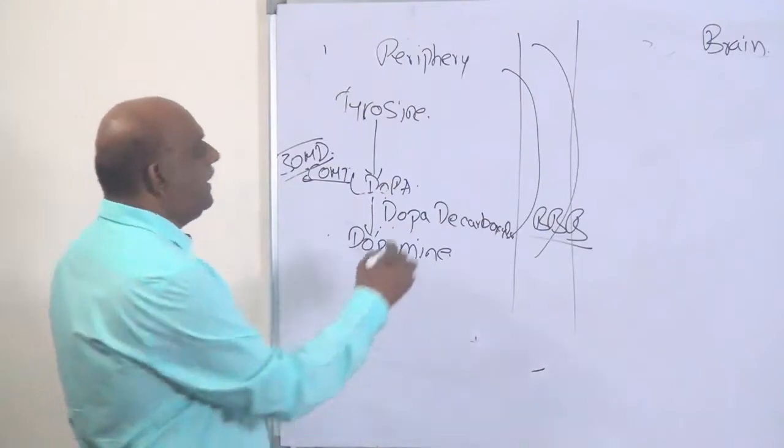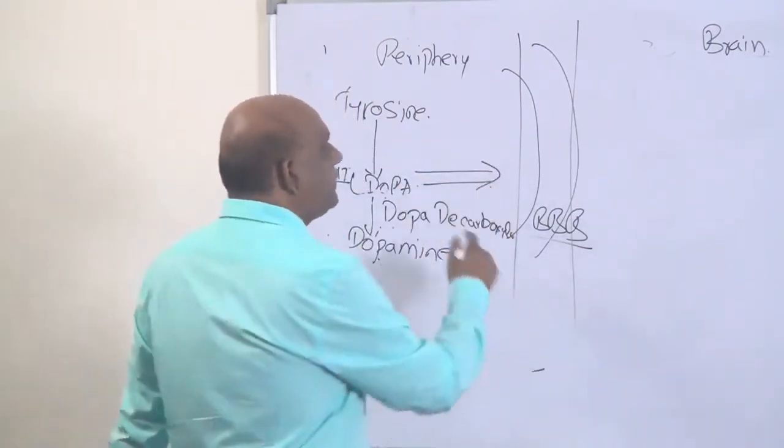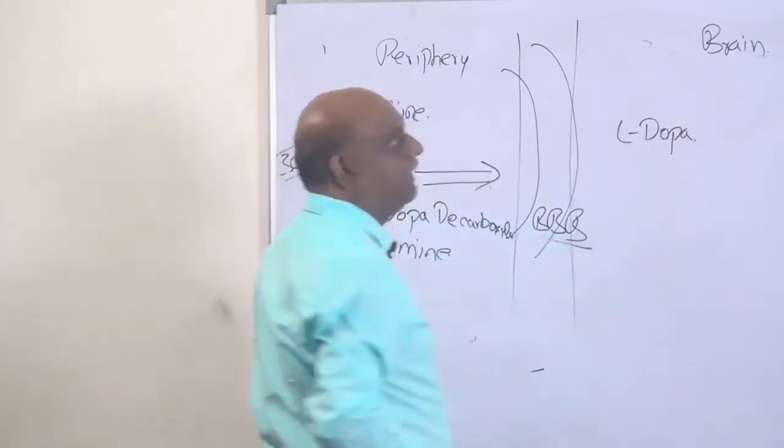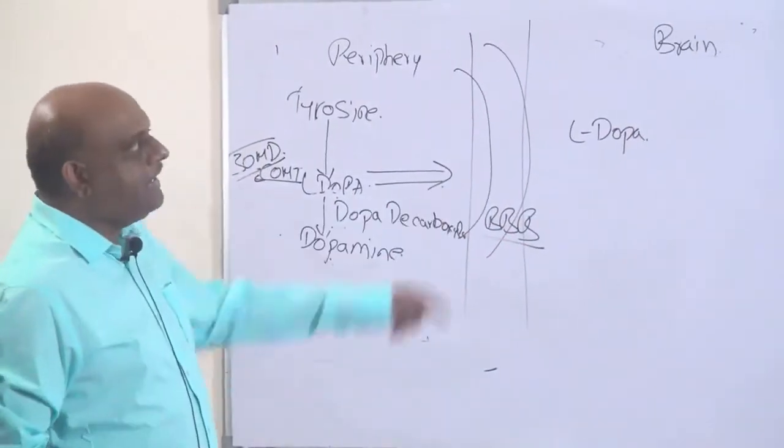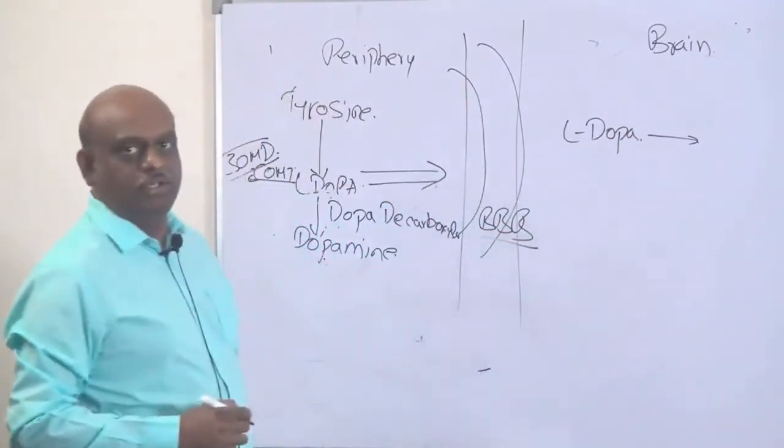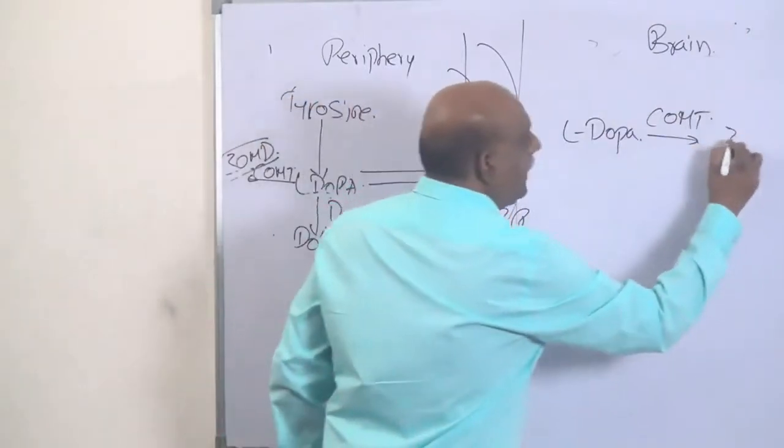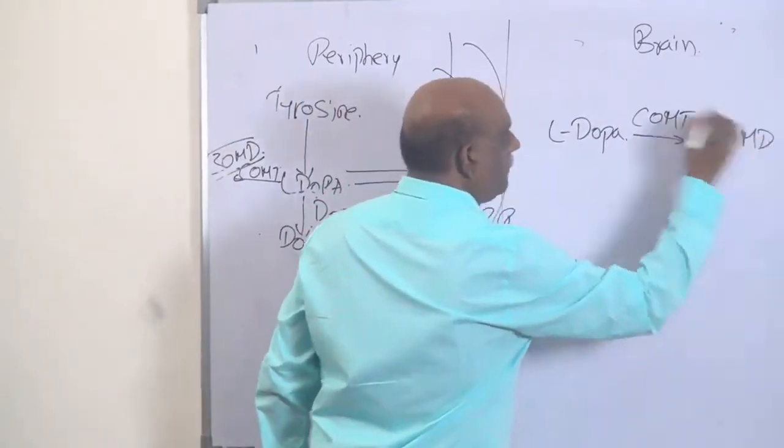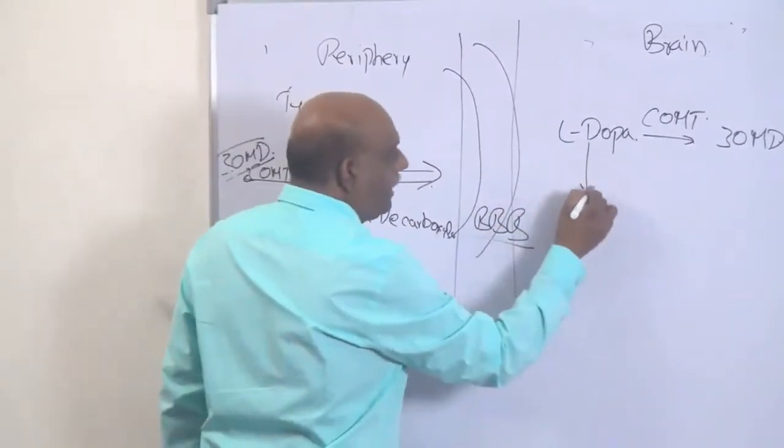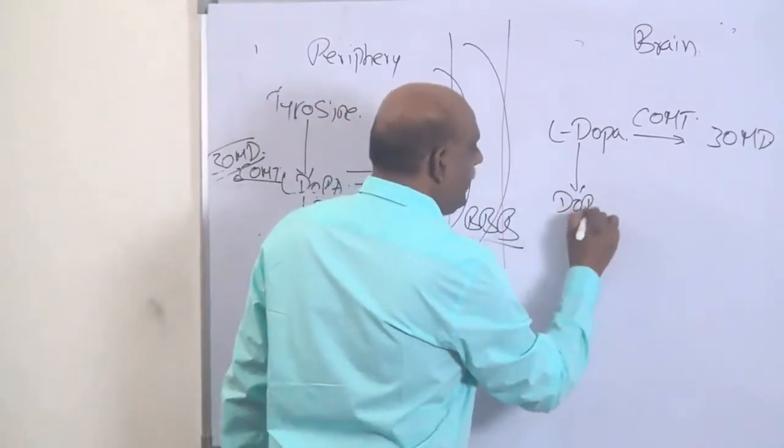Now L-dopa started its journey, crosses the bridge and enters into the brain. Then inside the brain, once more, there is a mechanism by which you have COMT trying to convert that into 3-OMD, and L-dopa becomes dopamine. What you need to remember here also, it becomes dopamine.